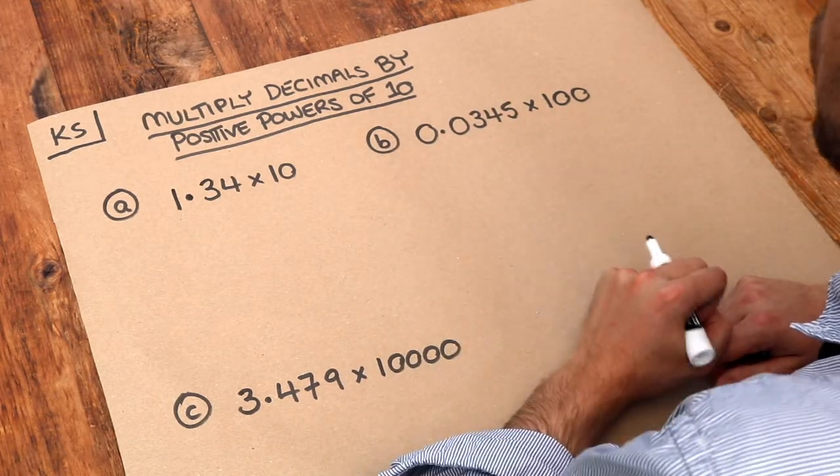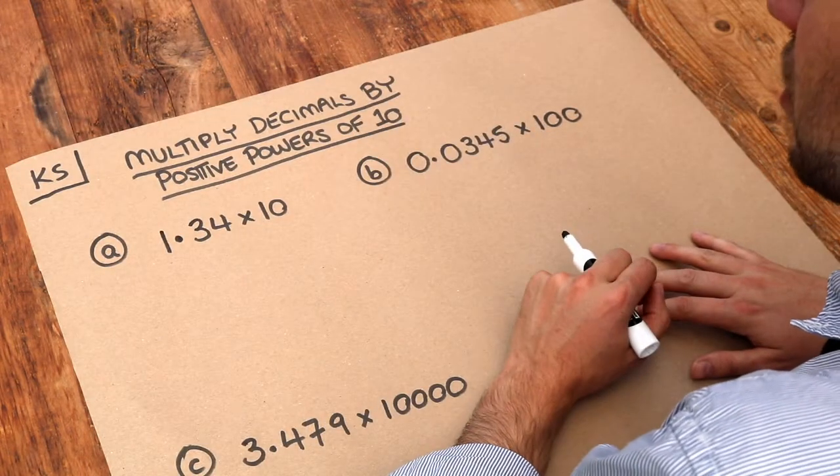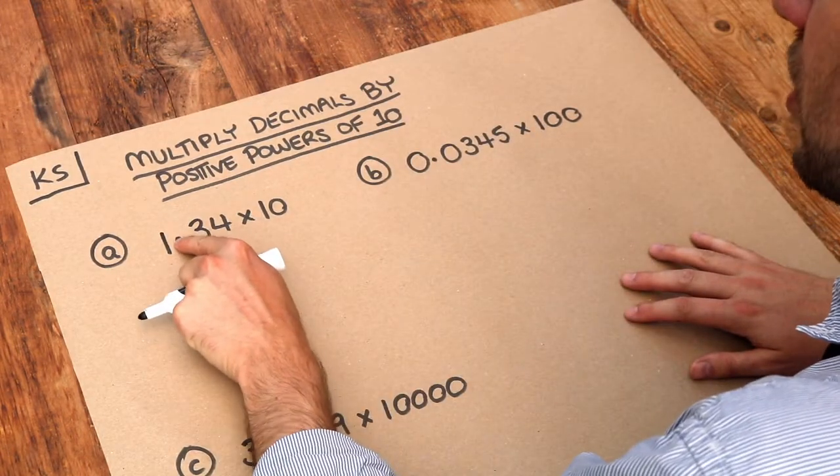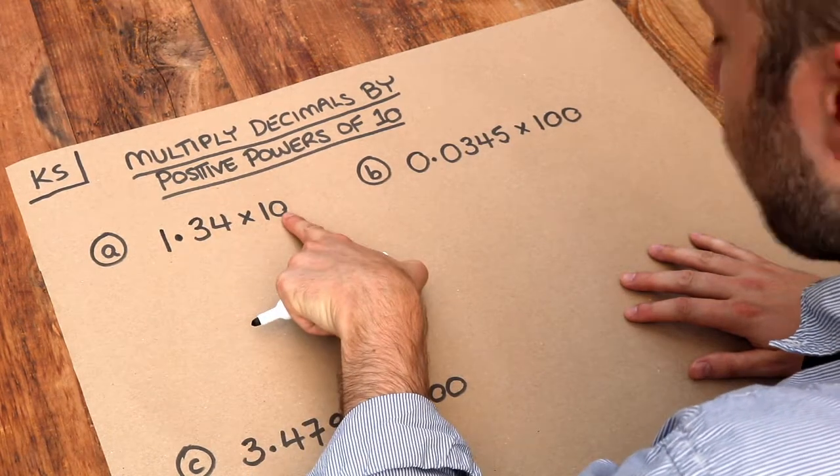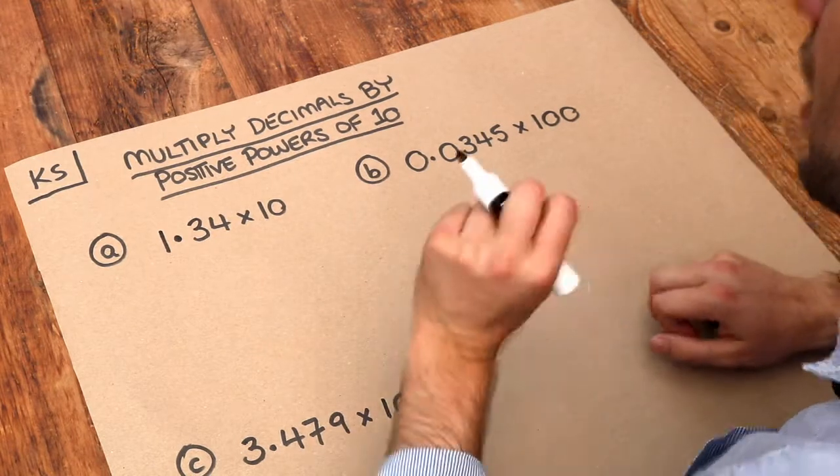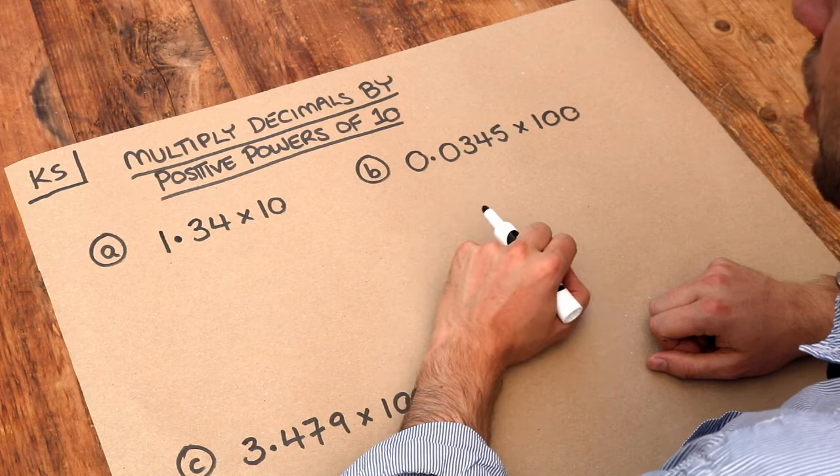And the only thing you need to remember for this video is that whenever you multiply by say 10 or 100, it's going to move the decimal point to the right. And the number of zeros on this, so here we've got one zero, here we've got two zeros, here we've got four zeros, that tells you how many places the decimal point is going to move to the right.